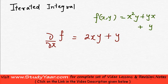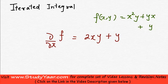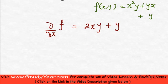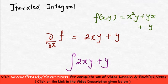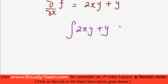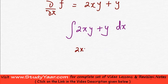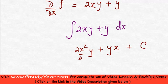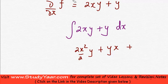Now, to get back this thing from this, what I can do is I can integrate this assuming y as a constant. Just like I differentiated this assuming y as a constant, I can integrate this assuming y as a constant. What do I get? I get 2x squared over 2 times y plus y times x plus a constant. Since I am assuming y as a constant, this constant could be a function of y.